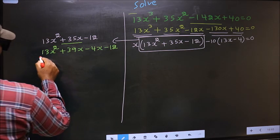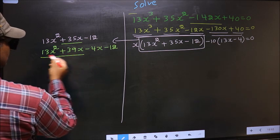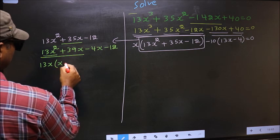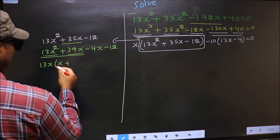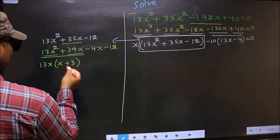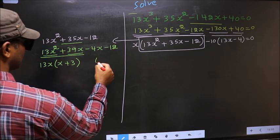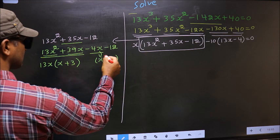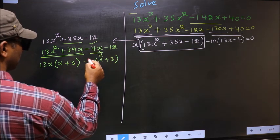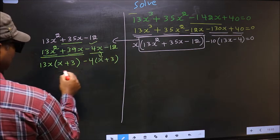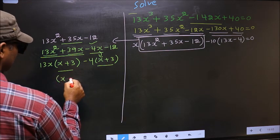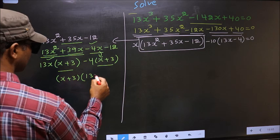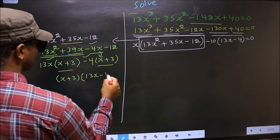What can be taken out common from the first two terms is 13x. So you get 13x(x + 3). Now whatever we got here, here also we should get the same thing. From the last terms, x has gone inside, so outside you get -4. Now take out (x + 3) common.